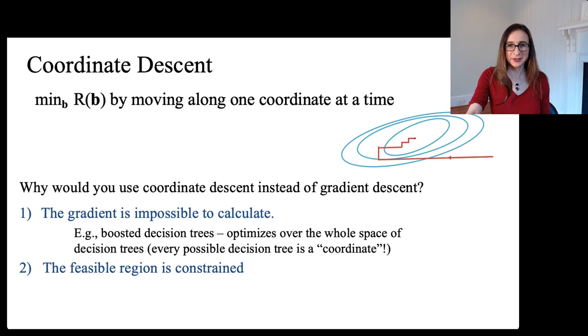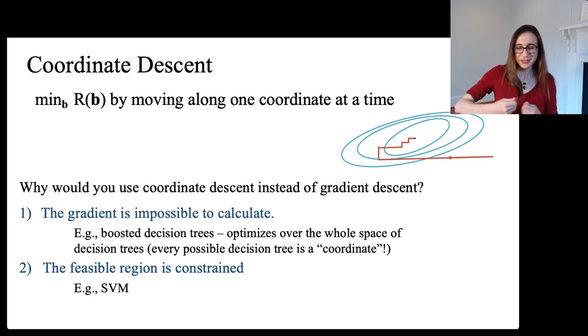Another example is that the feasible region is constrained. I've given an example here, which is support vector machines. With support vector machines, if you try to move along the gradient, you'll end up trying to move in a direction that is not feasible with respect to the constraints of support vector machines. So if you're doing sequential minimal optimization, you move two coordinates at a time so you can make sure that as you move one coordinate, the other coordinate allows you to stay within the feasible region.